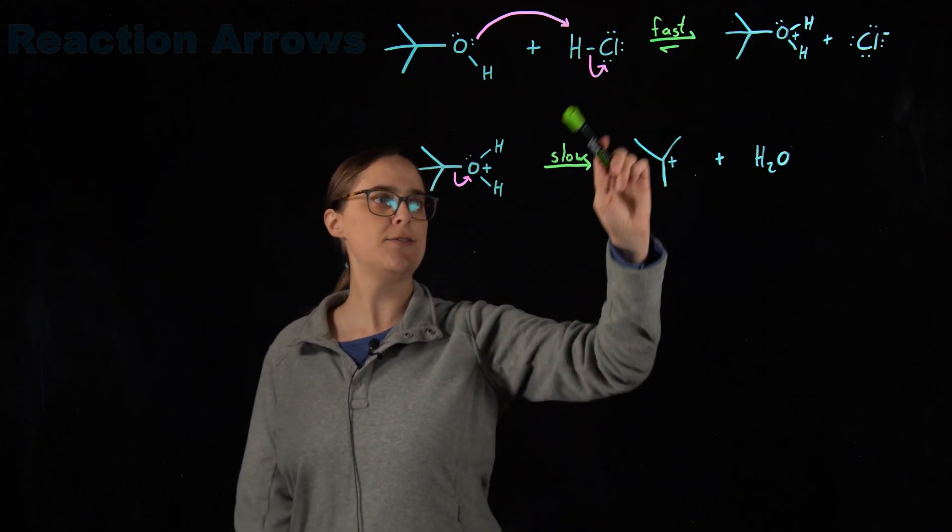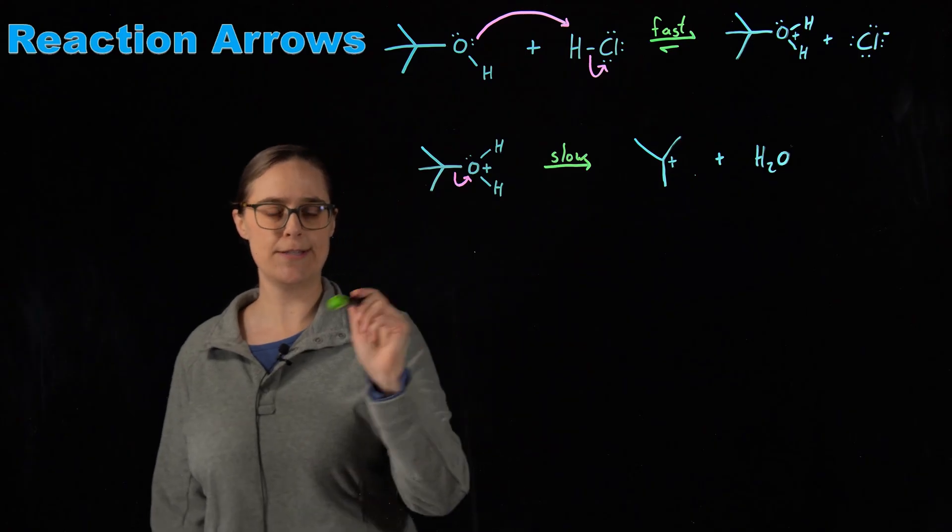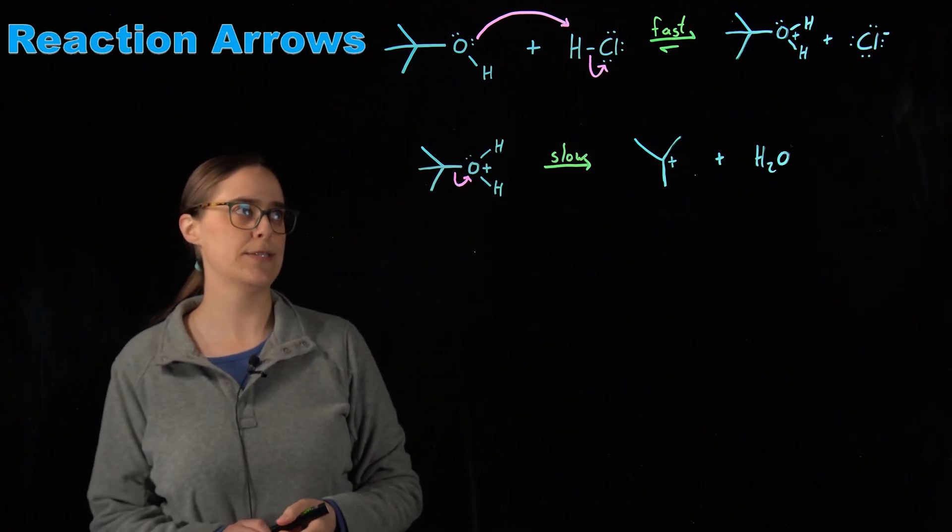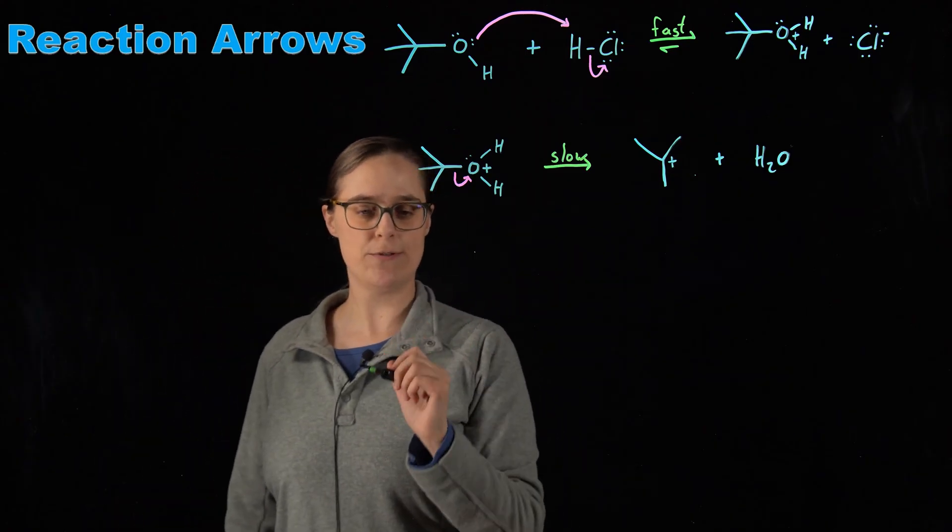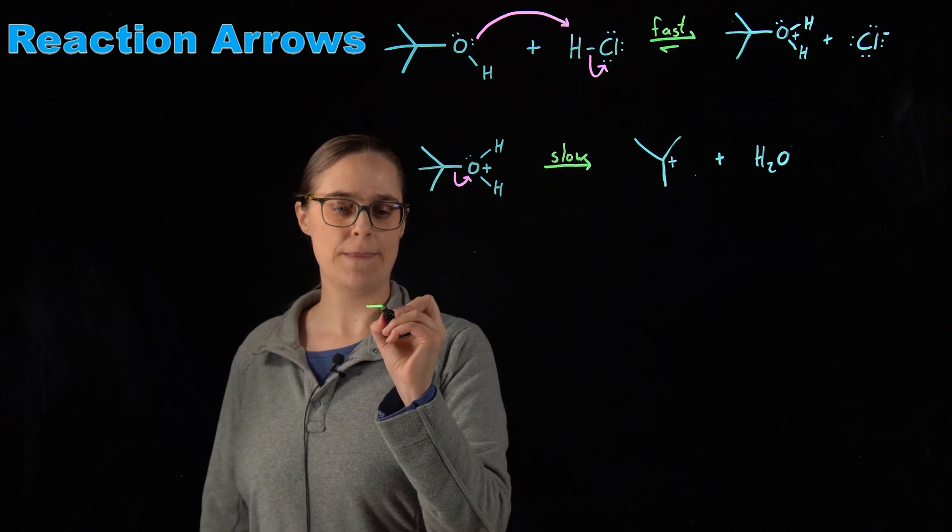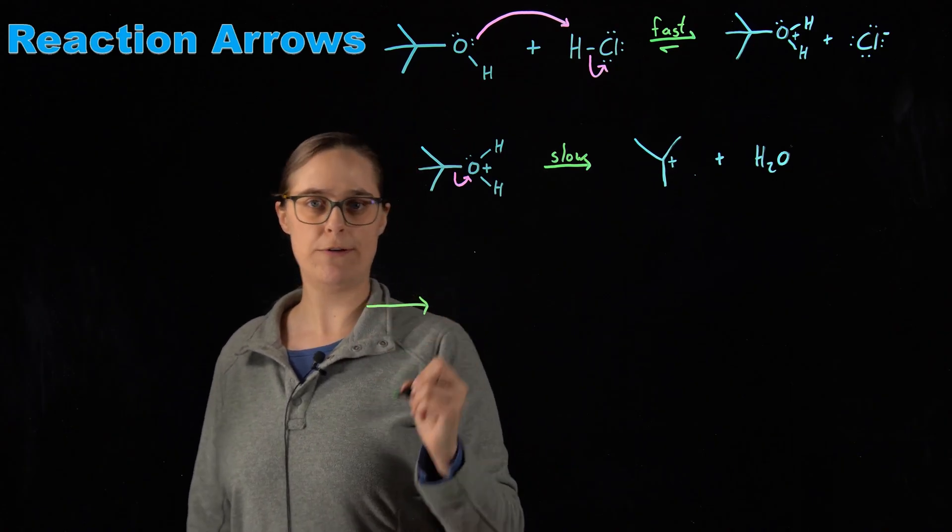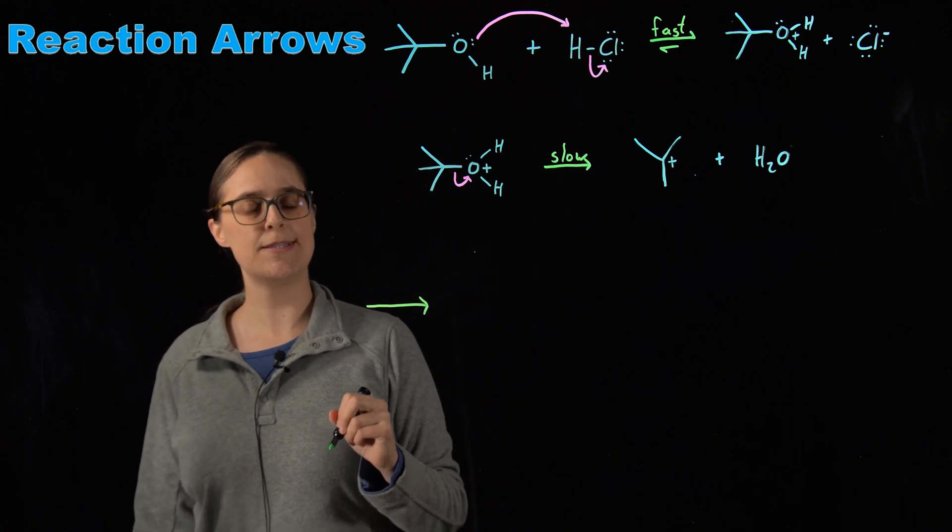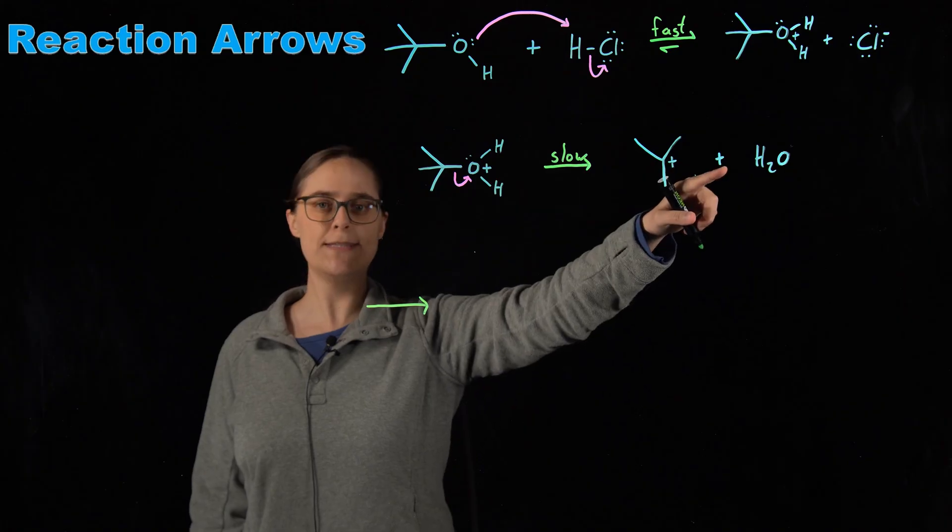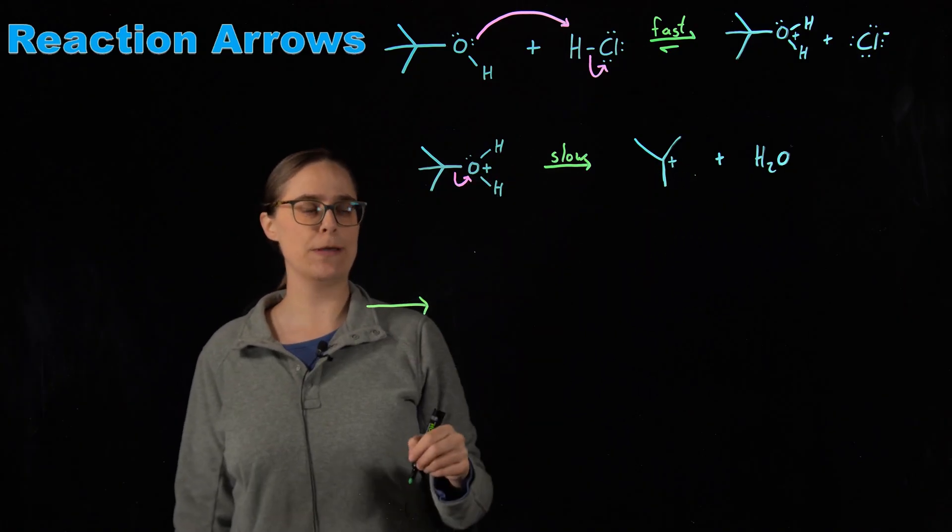Notice that these two arrows are different. Let's talk about the reaction arrows. So the reaction arrows are always drawn with straight lines. And if you see a one directional arrow, that implies that that step is irreversible. So once this occurs, there is no going back.